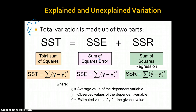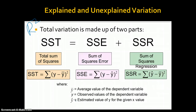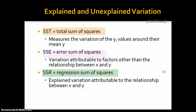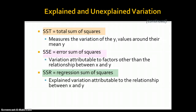The sum of squares error is the observed values of the dependent variable minus the estimated value of y for every given value of x, squared — that shows you the error. The sum of squares regression is when you take the estimated value of y for a given value of x, subtract the average value of y, and square that. So: total sum of squares measures variation of all individual values around their mean; sum of squares error is variation attributable to factors other than the x-y relationship; and sum of squares regression explains variation attributable to the relationship between x and y.